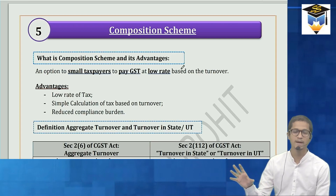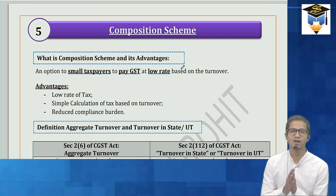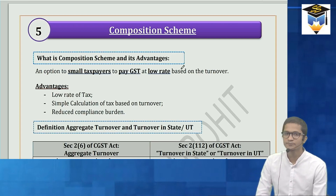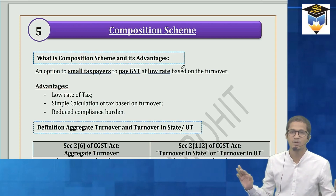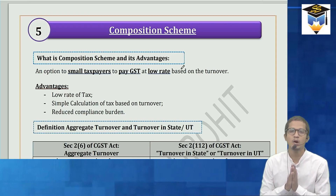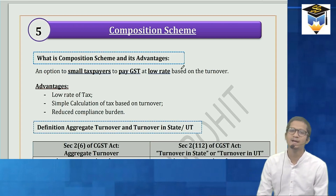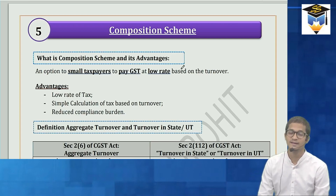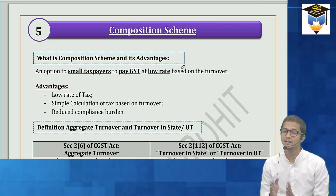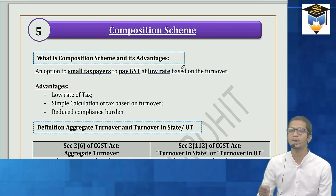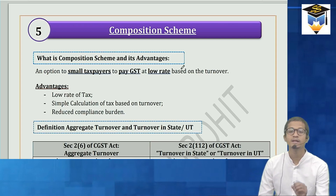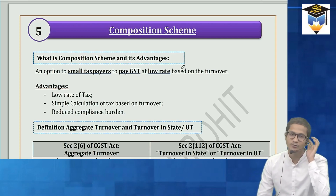In the regular scheme you can take input tax credit. In the composition scheme you don't take any input tax credit. Whatever purchases you've made, you will not be getting any ITC. On your outward supplies you have to pay GST at a flat rate — without collecting it from your recipient. For example if the rate is 1%, you pay 1% directly on the sale amount.